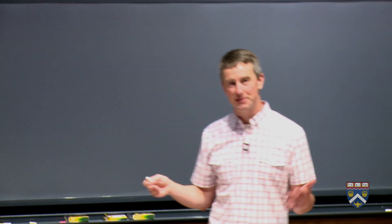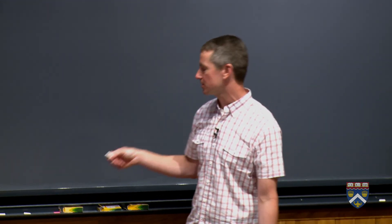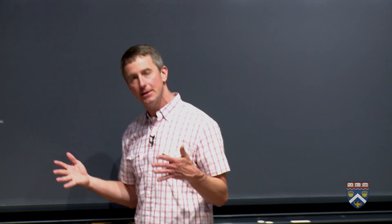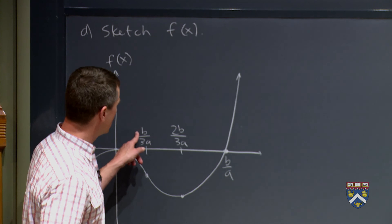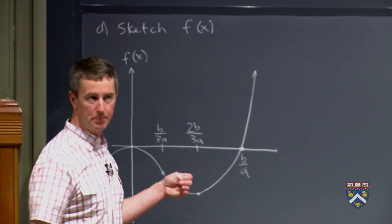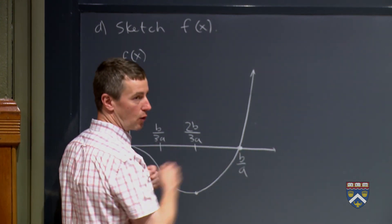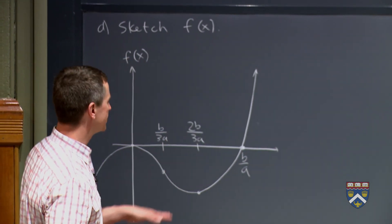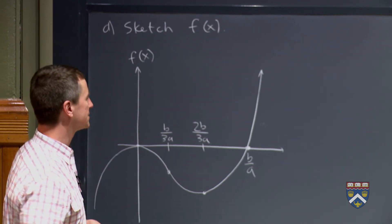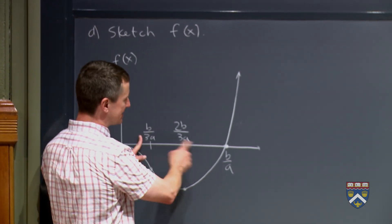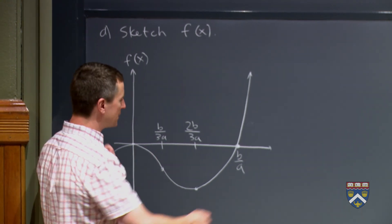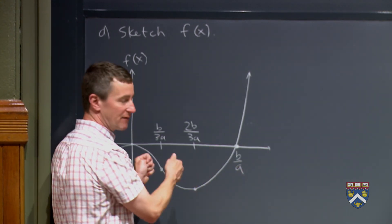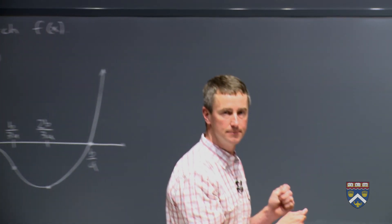Now we know what every member of this family looks like. You can ask further questions, like what happens as b increases: the numerators of all these fractions grow, so the graph stretches horizontally. As a gets bigger, since a is in the denominator, the fractions get smaller and the graph gets squeezed horizontally. That's everything there is to know about this family of curves. We have an applet for you to explore this by varying the values of b and a to confirm what we found here.